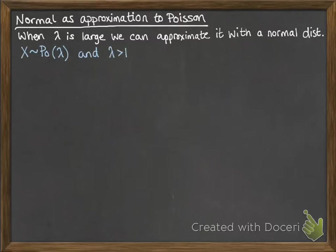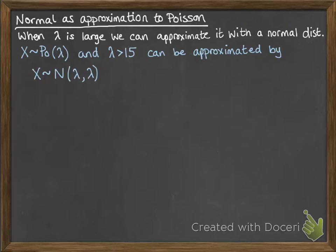So when lambda is large enough, we can approximate it with a normal distribution. If x follows a Poisson distribution with mean lambda, and lambda is bigger than 15, then we can approximate it with a normal distribution. And remember the parameters for normal were the mean and the variance. Well, they're both lambda when you're talking about Poisson. So we have this normal distribution with parameters lambda and lambda.